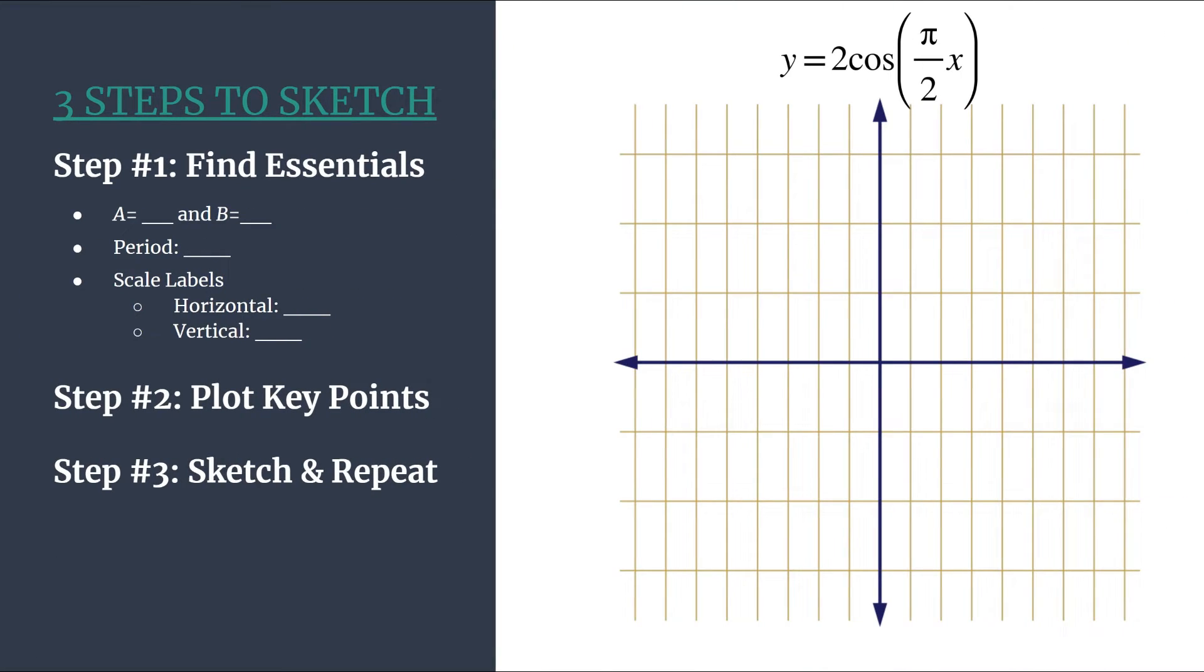We have our method outlined on the left and we've got a grid on the right. Remember our steps are one, find the essential information and analyze. Two, plot the key points in the cosine pattern. And three, sketch and repeat.